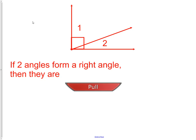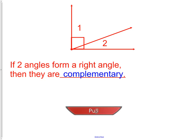If two angles form a right angle, then they are complementary. Complementary angles are two angles whose sum is 90 degrees. This makes sense since all right angles are 90 degrees. Therefore, if we add angles one and two in the picture, we would get 90 degrees.